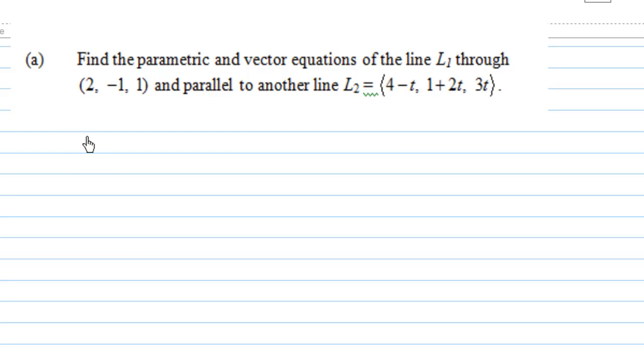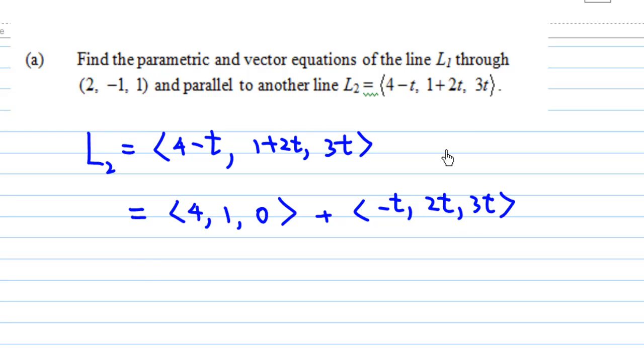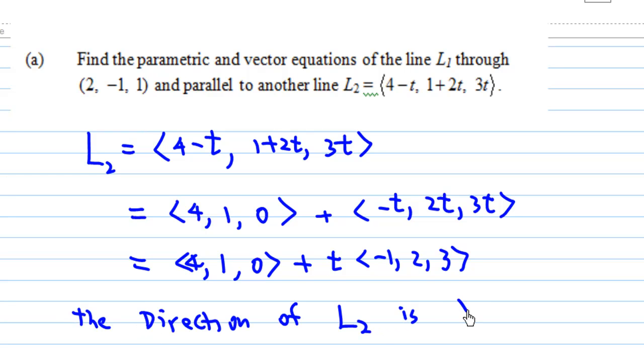L2 is given by (4-t, 1+2t, 3t). We can separate them as (4, 1, 0) plus (-t, 2t, 3t). Factoring out the t, we get (4, 1, 0) plus t(-1, 2, 3). This means the direction of L2 is v = (-1, 2, 3).